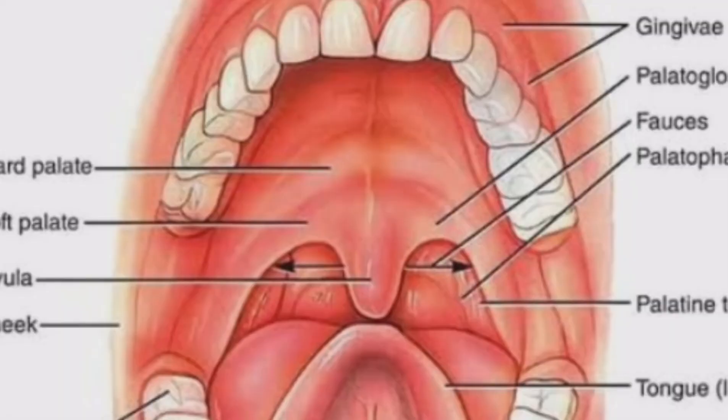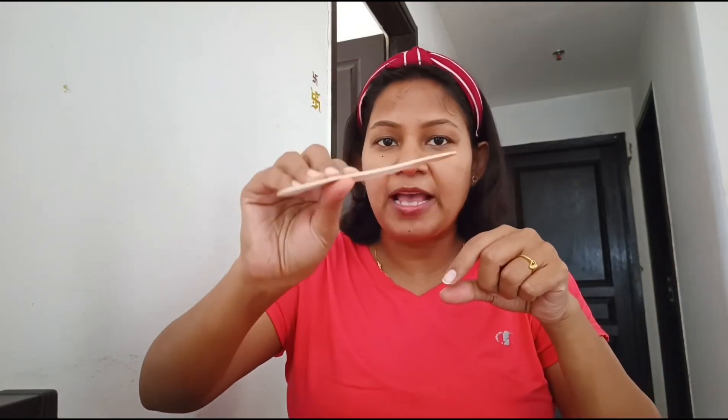The last step: ask the client to say 'ah' and focus your light to check the oropharynx, tonsils, pillars of the tonsils, and all structures. This is a darkened area, so use your light source and press with the spatula here. This is step eight according to WHO.